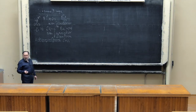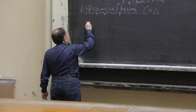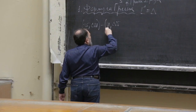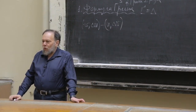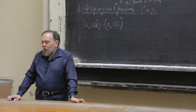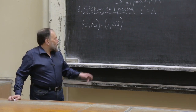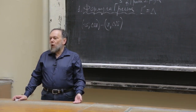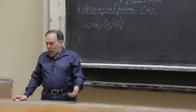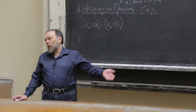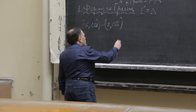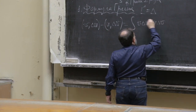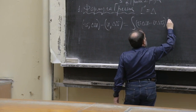Пусть у нас есть функции U и V, и мы хотим написать разность таких произведений: V·ΔU минус U·ΔV. Считаю, что функции U и V действительные, поэтому комплексные сопряжения не пишу. Если бы эта разность равнялась нулю, это было бы определение сопряжённого оператора. Мы эту разность вычисляли для оператора Штурма–Лиувилля: интегрировали по частям, чтобы увидеть, самосопряжённый оператор или нет.